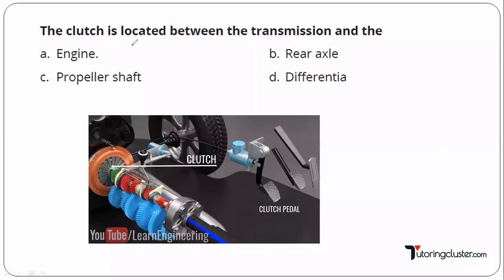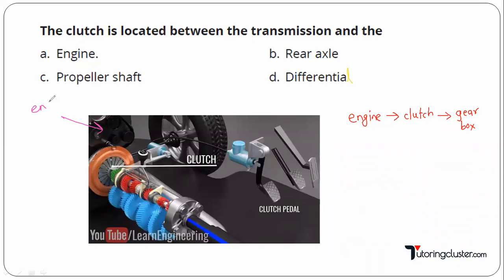The first question is: the clutch is located between transmission and engine in an automobile. So first you will come across the engine, then you will have the clutch, and then you are going to have the gearbox or transmission system.